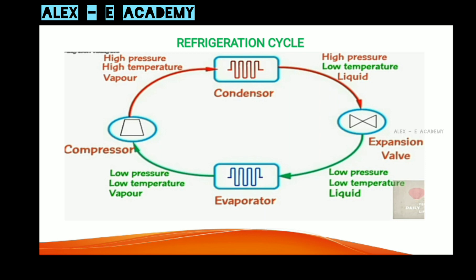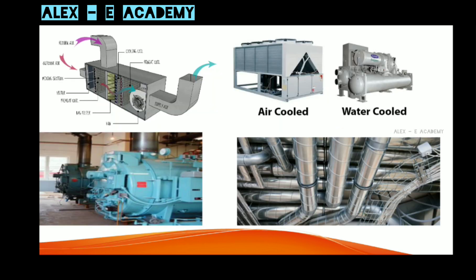This is the working principle for chillers, cooling towers, AC, and fridge. The third component is boilers. In an HVAC system, boilers are used to increase temperature. For example, if the human comfort temperature is 24 degrees Celsius but the environment is at 10 degrees Celsius, you need to increase the temperature — that is when you use boilers in the HVAC system.